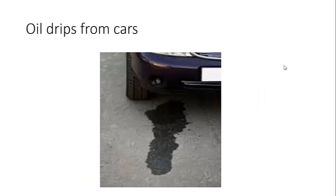Finally, oil drips from cars — write down your answer now. The correct answer here is that this is an example of runoff, and because it's going to run off into groundwater or into streams, this would be non-point source pollution. Remember, any time pollution runs off, it's always going to be non-point source pollution.